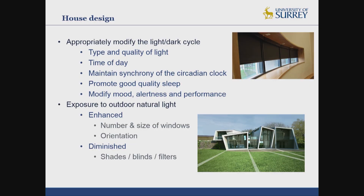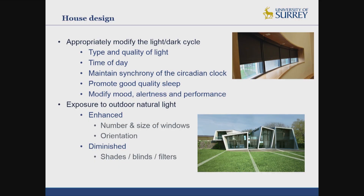When thinking about house or building design, what we really need to be doing is appropriately modifying the light-dark cycle. We need to think about the type and quality of light, but also the time of day that we're receiving it. At some times of day we want to maximise light; at others we want to minimise it. The main targets are to synchronise the clock and promote good sleep. To enhance outdoor light exposure, we can consider the number, size, and orientation of windows, and at other times utilise shades, blinds, or filters to cut out certain wavelengths of light.